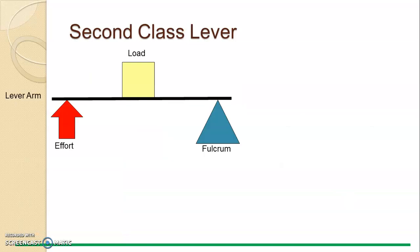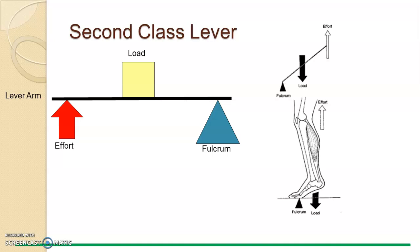Second class, load is in the middle. F equals 1, 2, 3. Fulcrum and effort are on either sides of the load. This is an advantage because the effort arm is always longer or greater than the load arm. So the distance between the load arm is shorter than the effort arm, therefore it's always a mechanical advantage.